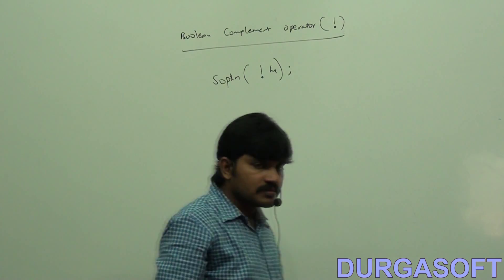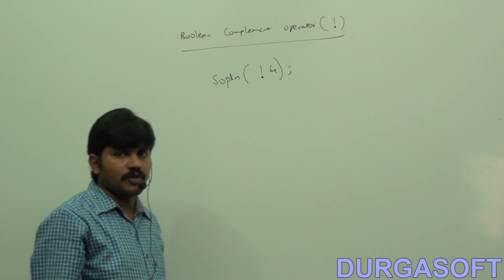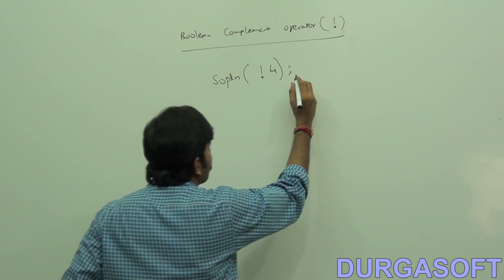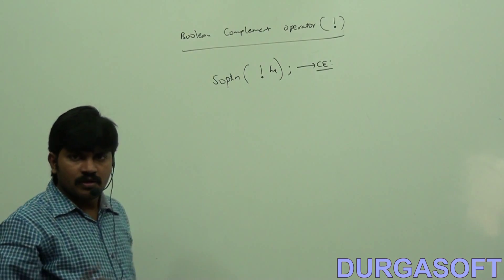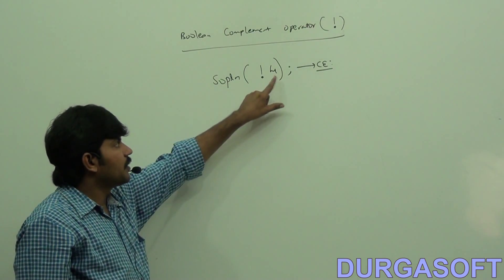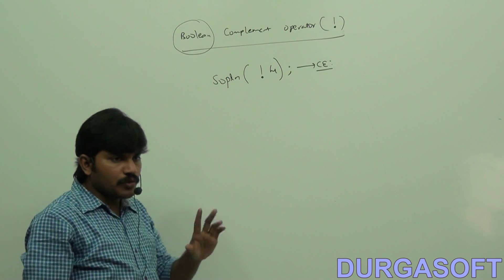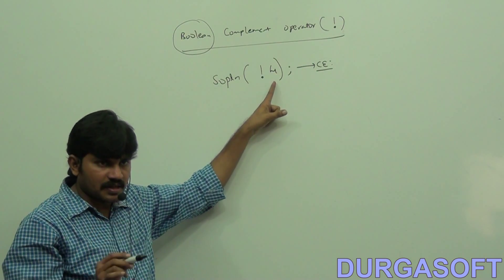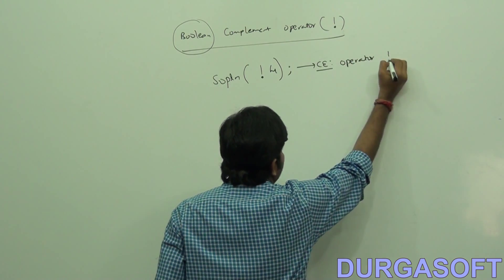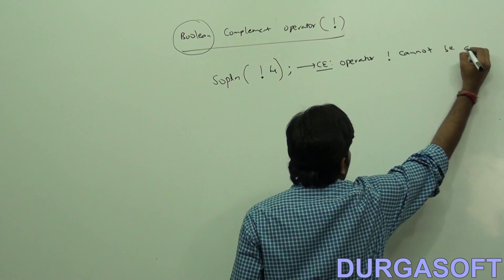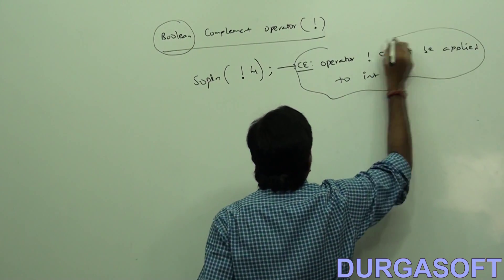What is the answer? Negation of 4 — true or false? We are going to get a compile-time error by default. The reason is simple: we can apply this operator only for boolean type. By mistake, if you are trying to apply it for integral types, you get a compile-time error saying 'operator negation cannot be applied to int.'